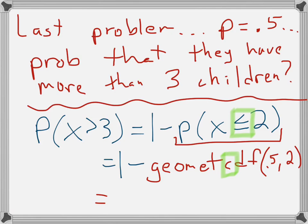So, in your calculator, you literally type that all in. One minus geometric PDF, 0.5, comma, 2. And then you get 0.75. So, that is the probability that they'll have more than three children. So, if you're going to use this strategy, three out of four times, you're going to have more than three children.